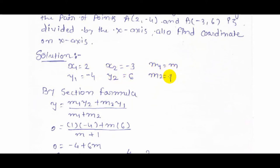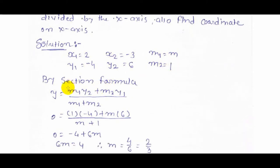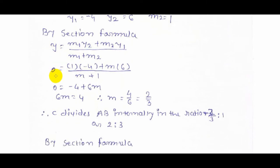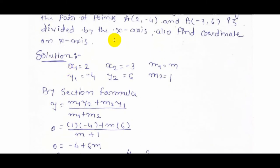By section formula: y = (m1*y2 + m2*y1) / (m1 + m2). This is the formula for internal division. Now y = 0 because the line is divided by the x-axis.